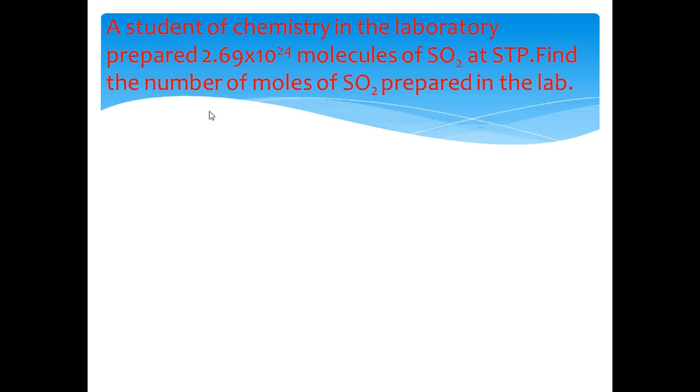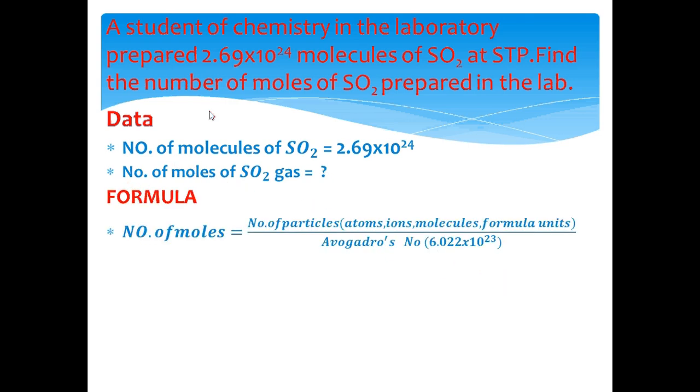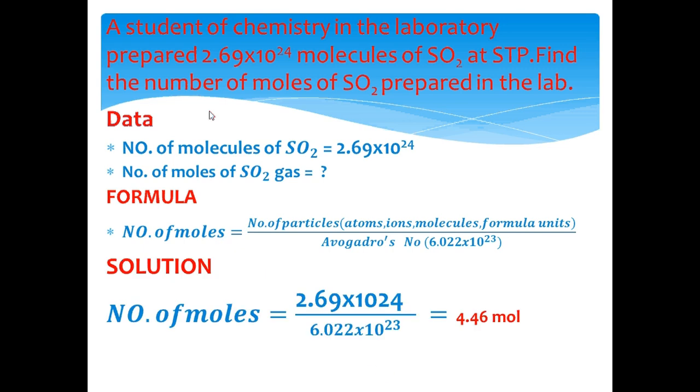The third example is: a student of chemistry in the laboratory prepared 2.69 × 10²⁴ molecules of sulfur dioxide (SO₂) at STP. Find the number of moles of SO₂ in the lab. Data of this problem is given. The formula used for solving this numerical is number of moles equals number of particles divided by Avogadro's number. After solving the problem, we will get the answer 4.46 moles.